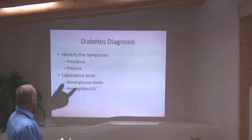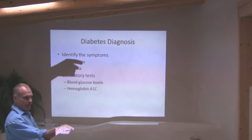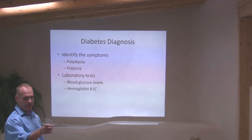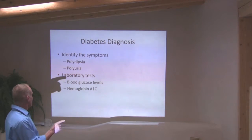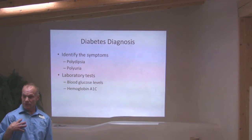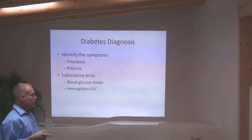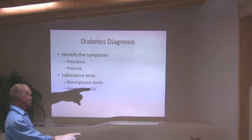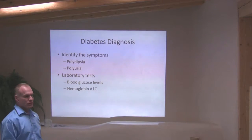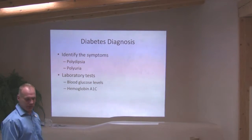Diagnosing diabetes — remember polydipsia and polyuria. We don't taste urine anymore; in modern medicine we get a blood glucose level or a hemoglobin A1C, which tells us what sugar levels have been doing over a period of time.